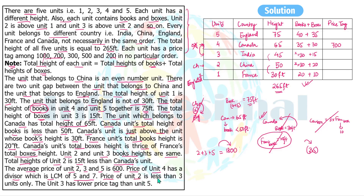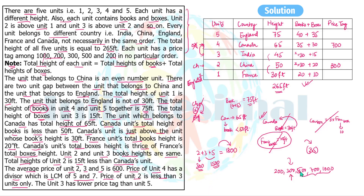The price of unit two is less than only three units — meaning three units have a higher price, so unit two's price is the third-lowest. Looking at the remaining values, unit two's price is 300. That means units three and five together total 1800 − 300 = 1500. The only remaining values that sum to 1500 are 500 and 1000.